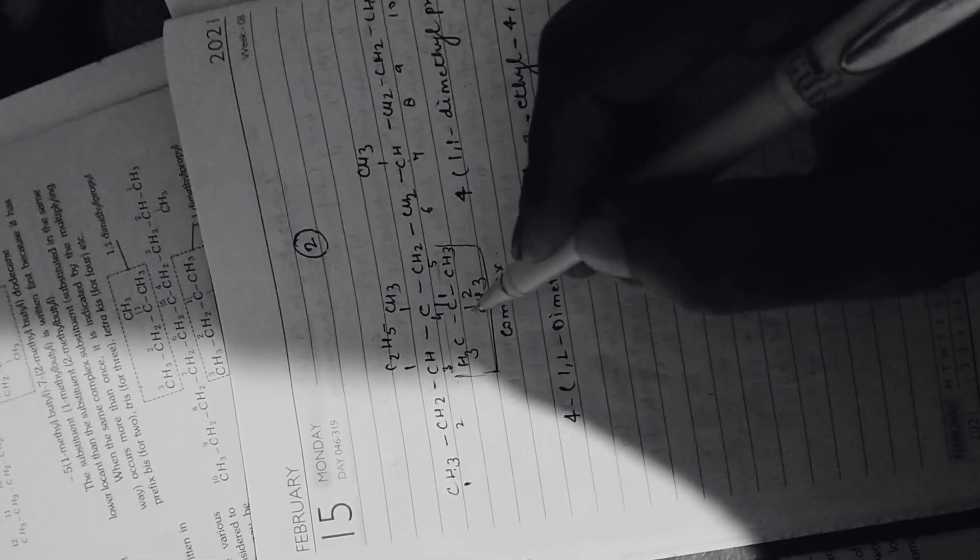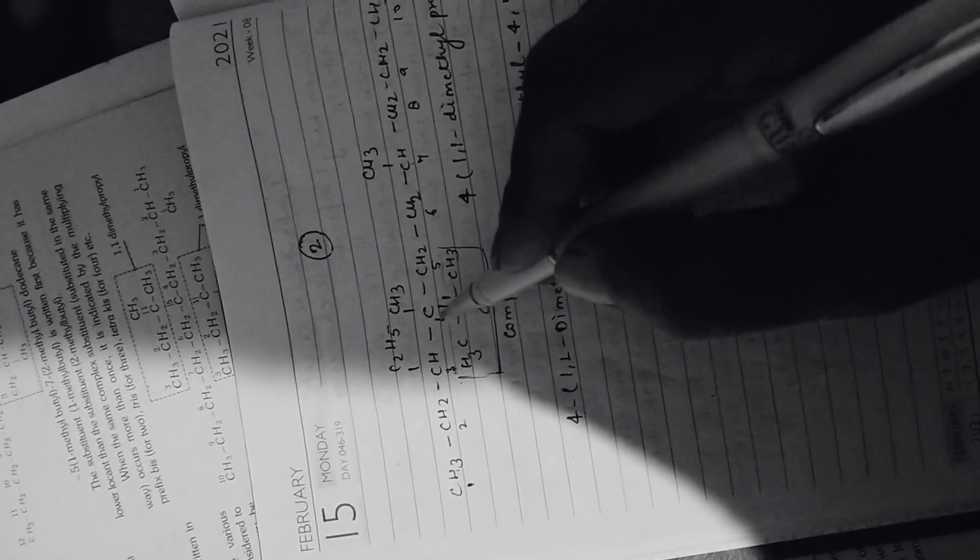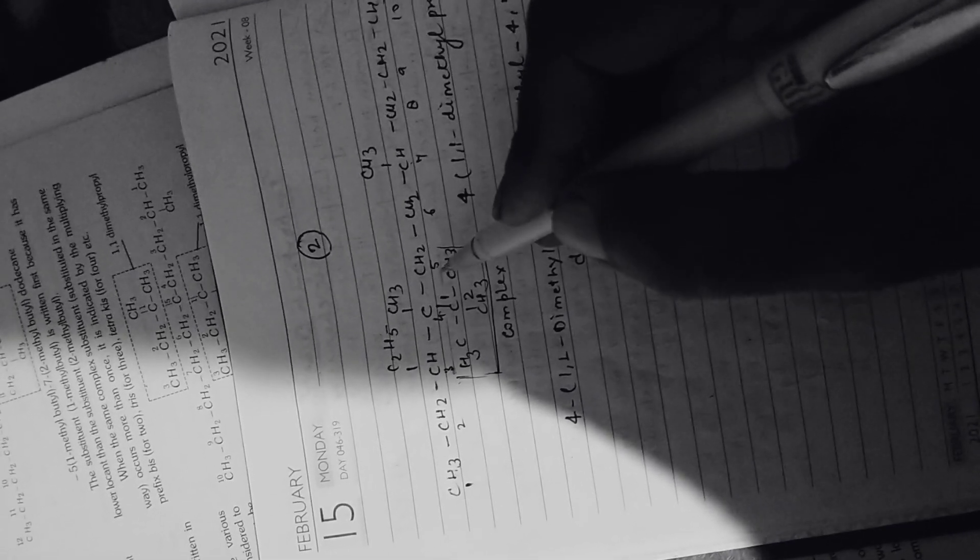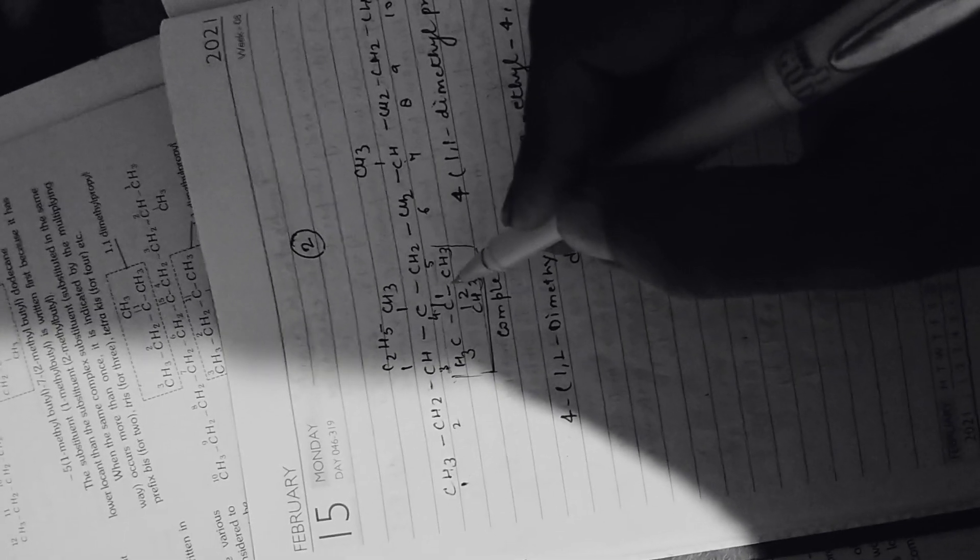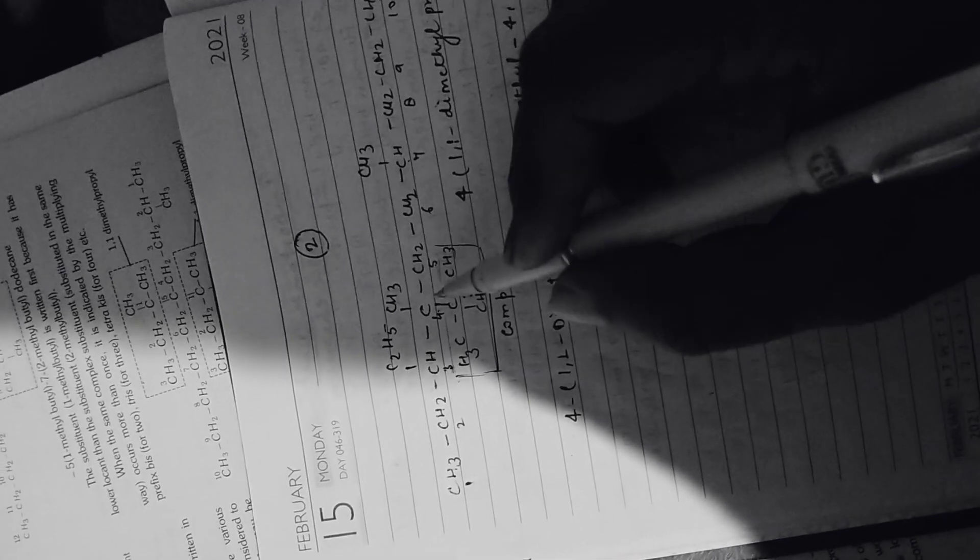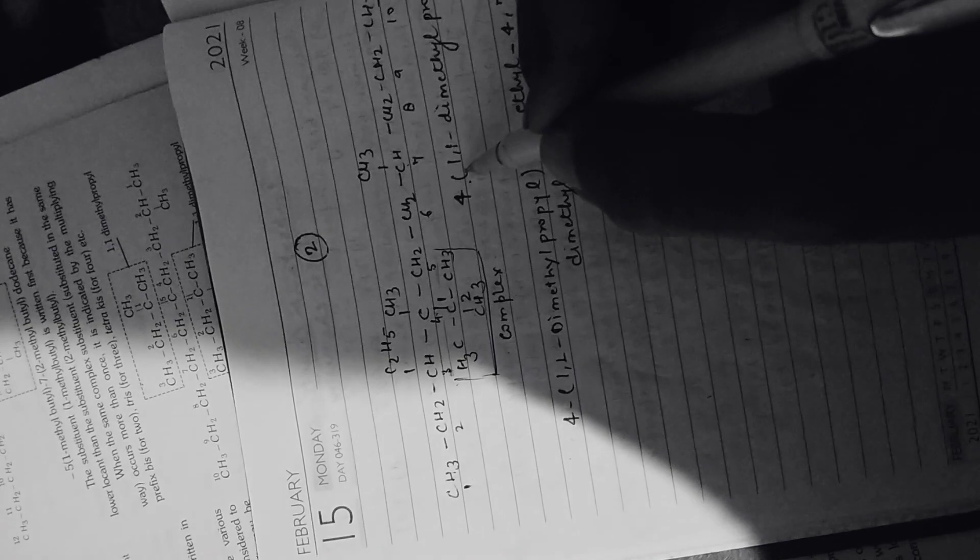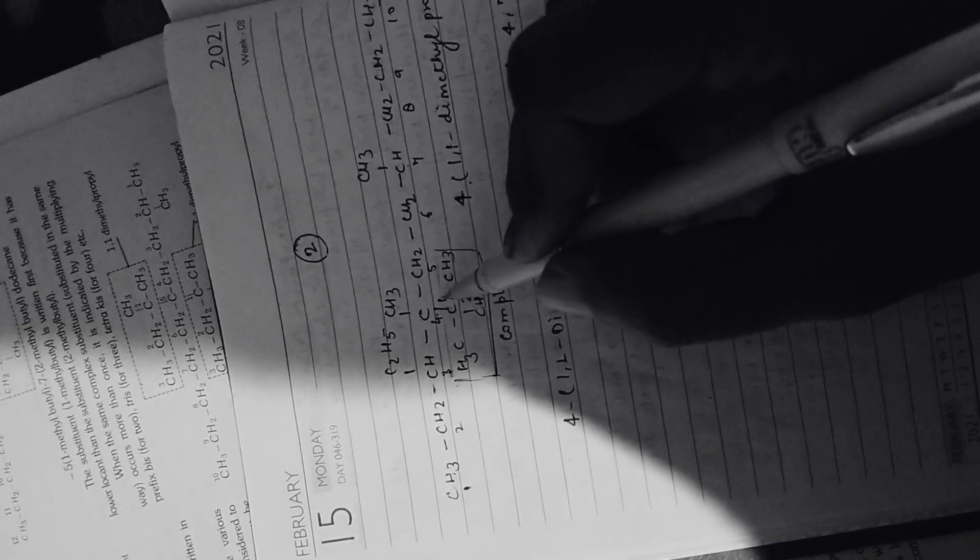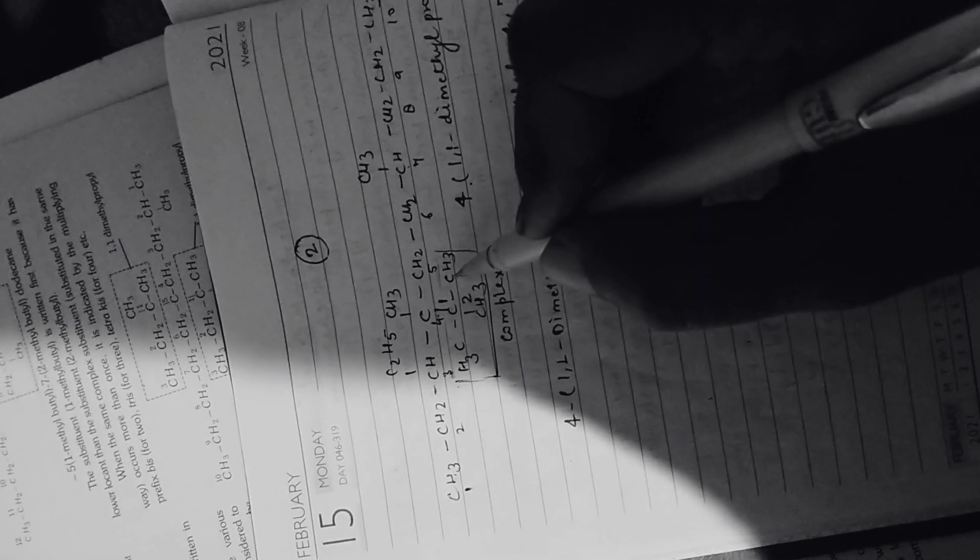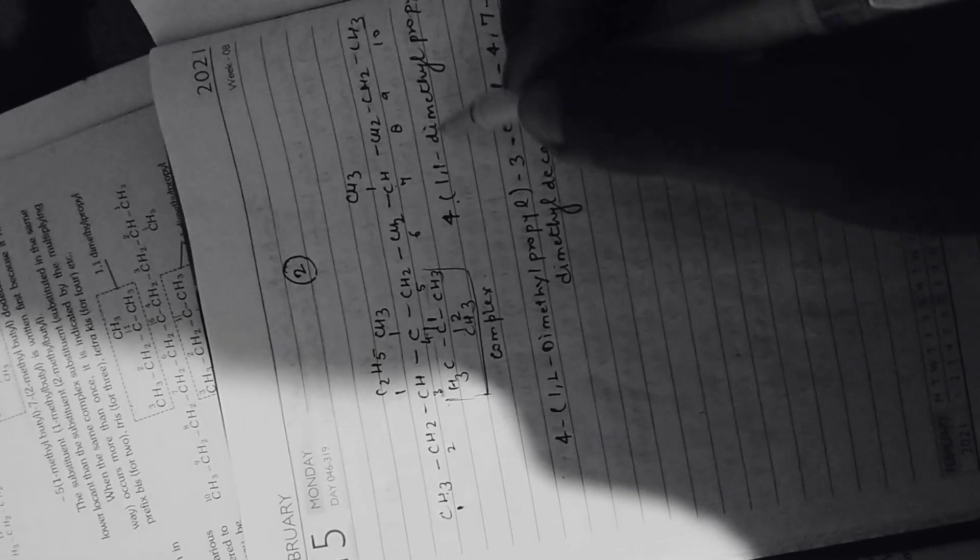After reaching the fourth carbon, you can solve this problem by nomenclating this moiety. How can you write it down? First of all, on the fourth carbon, you will write down 'fourth', then you write down the bracket. One, one dimethyl means at the one position, two methyl groups are present, so that's why you can write down one, one dimethyl.